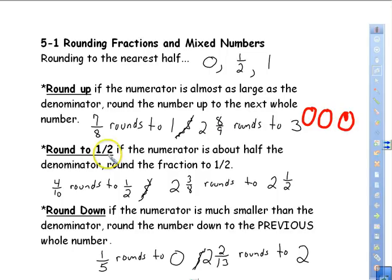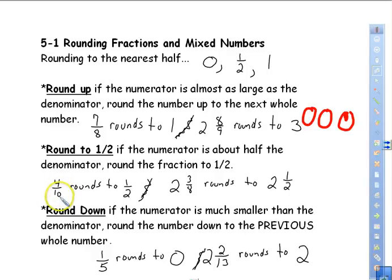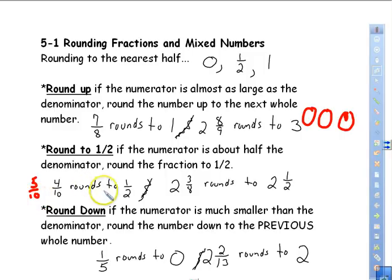When we round to the nearest half, it means the numerator is about half of the denominator — round the fraction to one half. For example, 4/10: half of ten is five, so one half would be 5/10. Four is almost half of ten, so we round this number to one half.